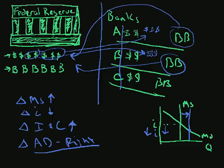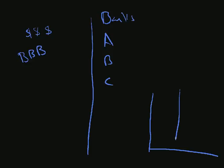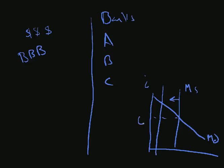Let's do this all over again. Only this time we're going to start with the Federal Reserve's dollars and bonds over here, and we're going to have these banks — Bank A, B, and C. Only this time the Federal Reserve's policy is going to try to increase the interest rate. They would decrease the money supply because if they decrease the money supply, the interest rate goes up. These banks have dollars and bonds.